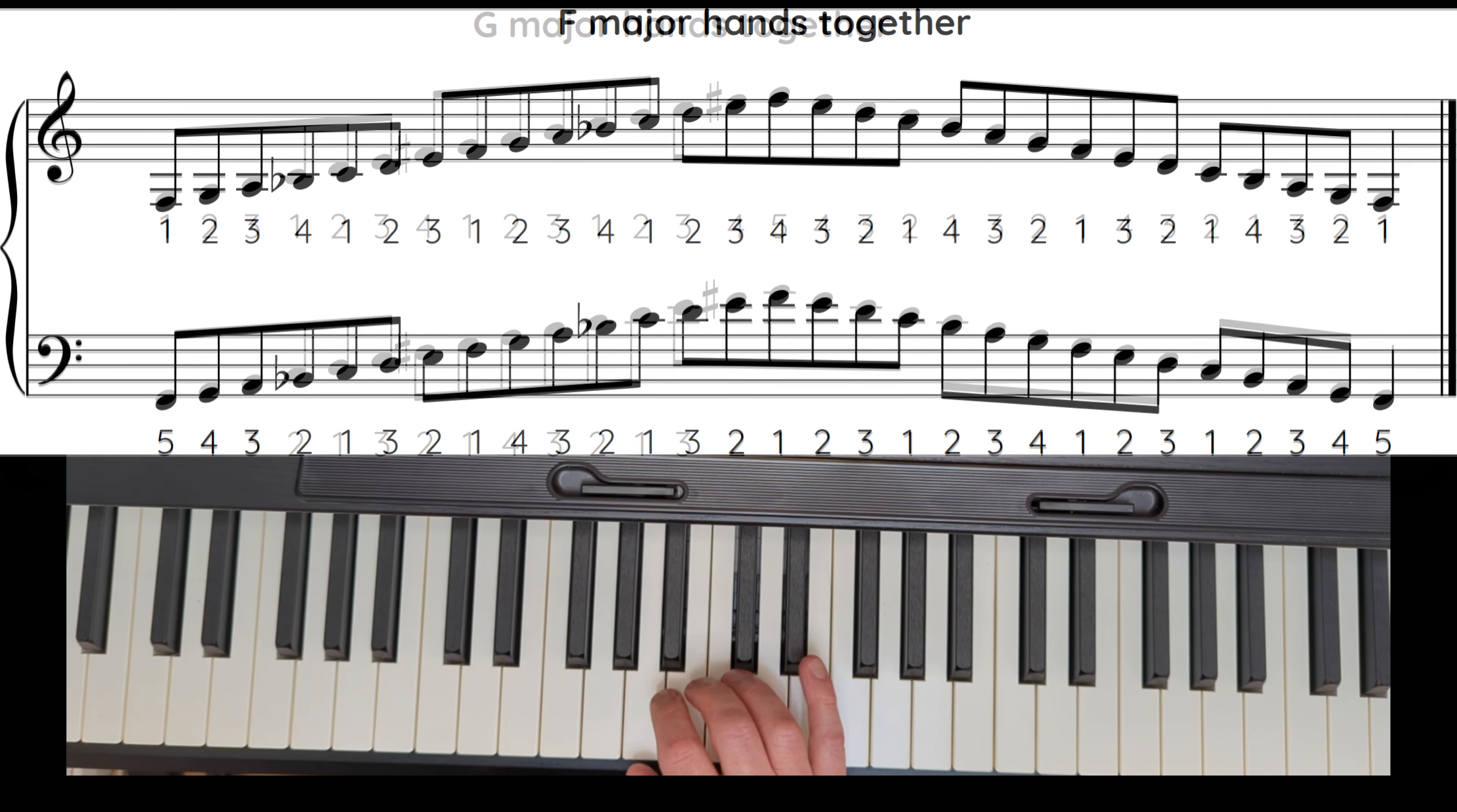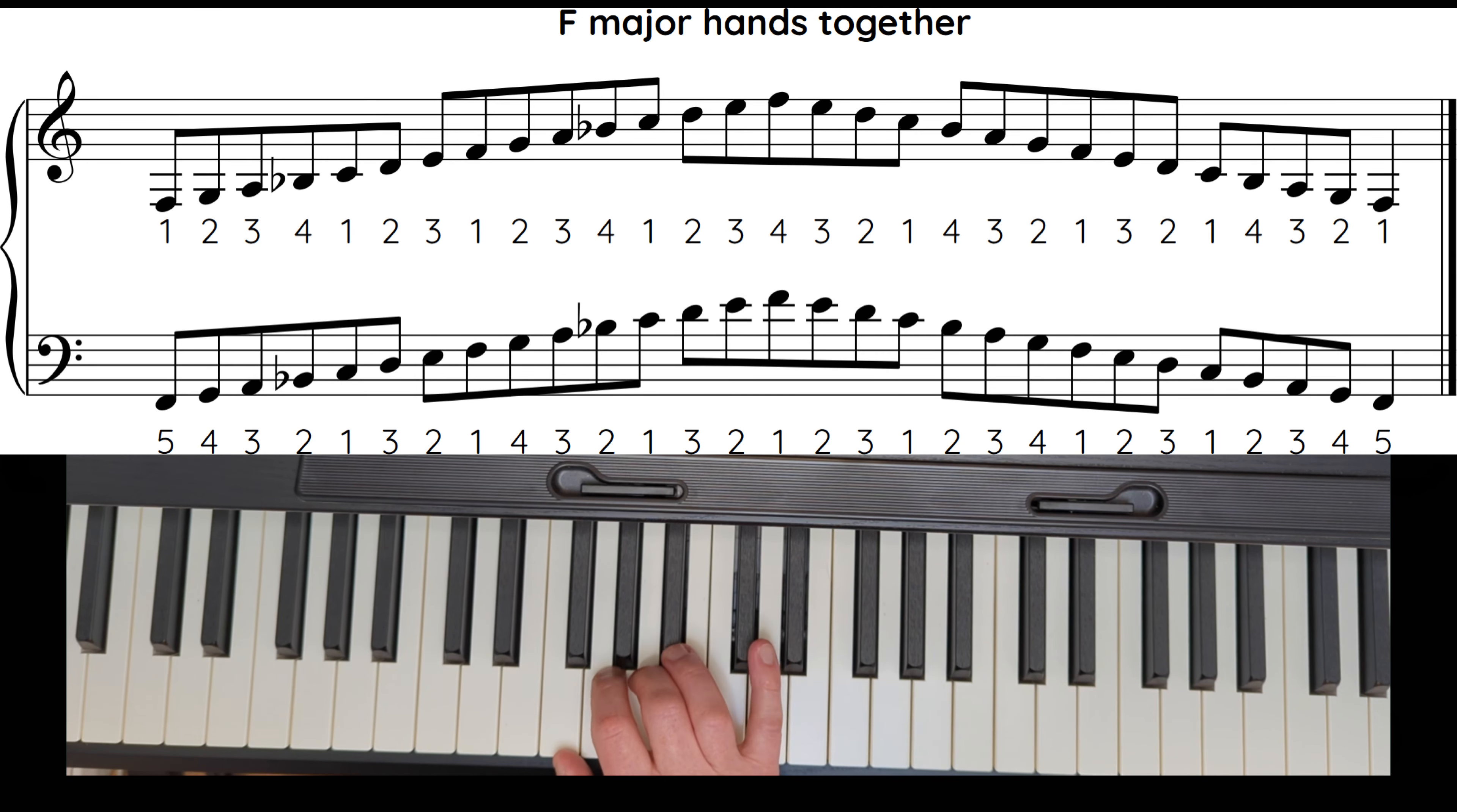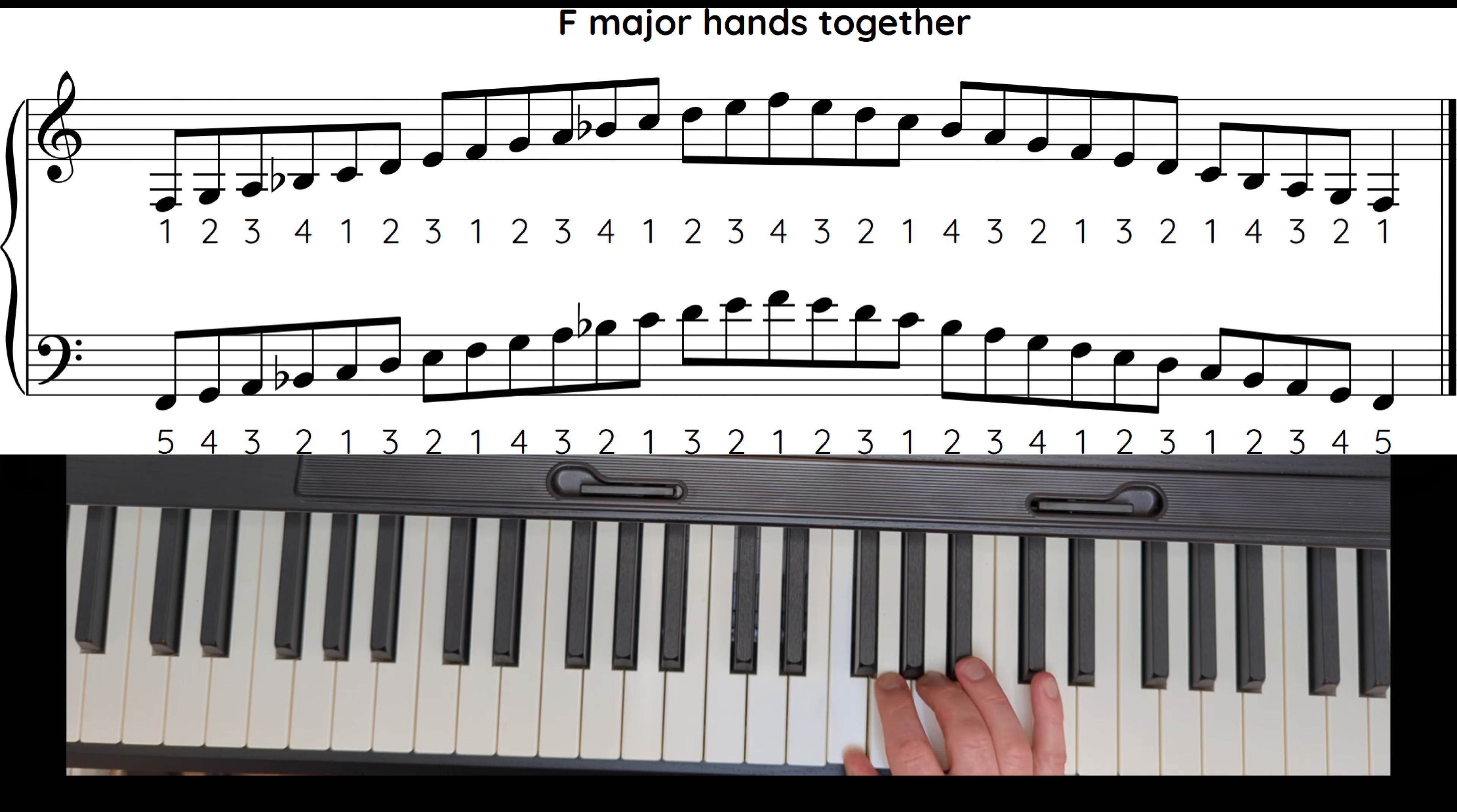The next one is F major. Right hand, this is the one where the right hand doesn't use the pinky: 1, 2, 3, 4. Finger 4 plays B flat, thumb under to C, thumb under to F. Here's finger 4 again on the B flat. Then we come down. Notice, don't use your pinky, get ready for finger 4 on a B flat, 3 over, finger 4 on a B flat.